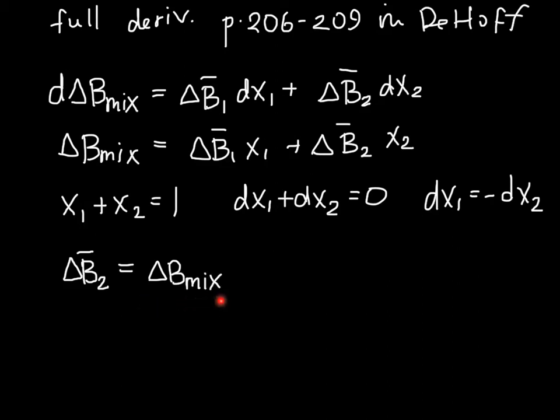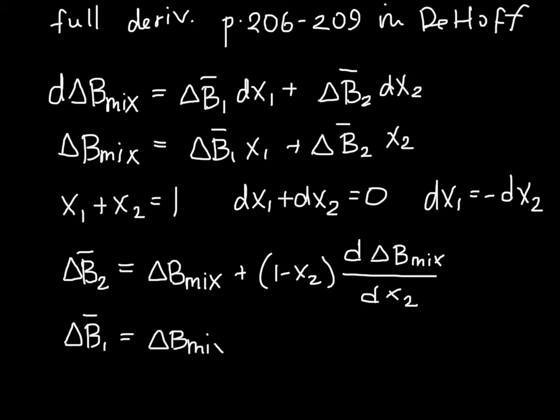So the change in partial molar B is equal to delta B mix. This is something that's easy to measure if we just know B of the solution, plus 1 minus X2, obviously that's easy if you know the composition, and then basically the slope of B mix as a function of X2. And for the change in the partial molar B of component 1, we have delta B mix plus this term where now we're subtracting X1, and then we're looking at the slope of B mix with respect to X1.